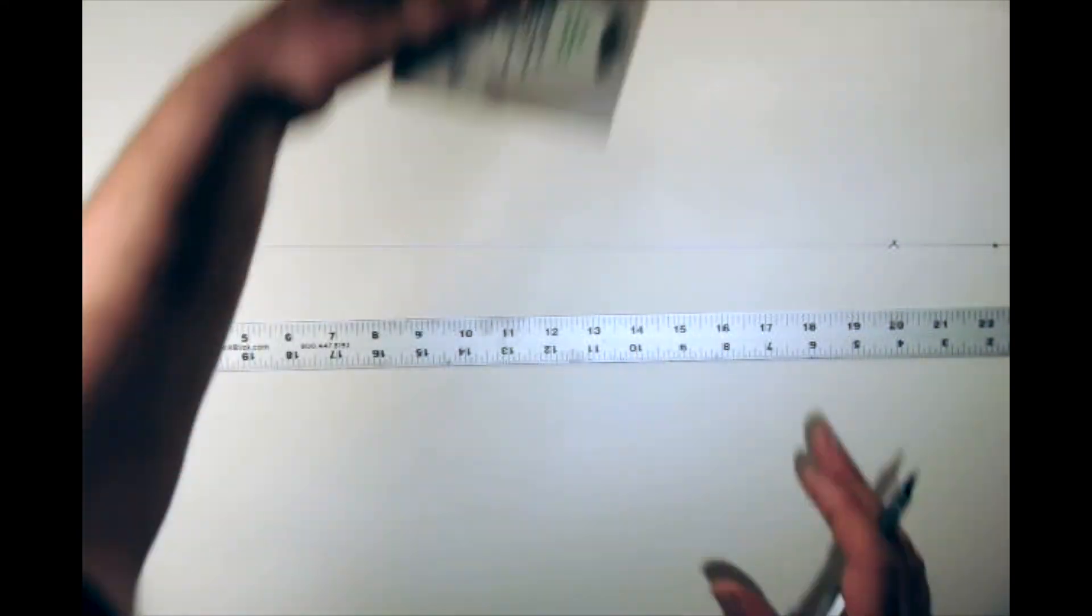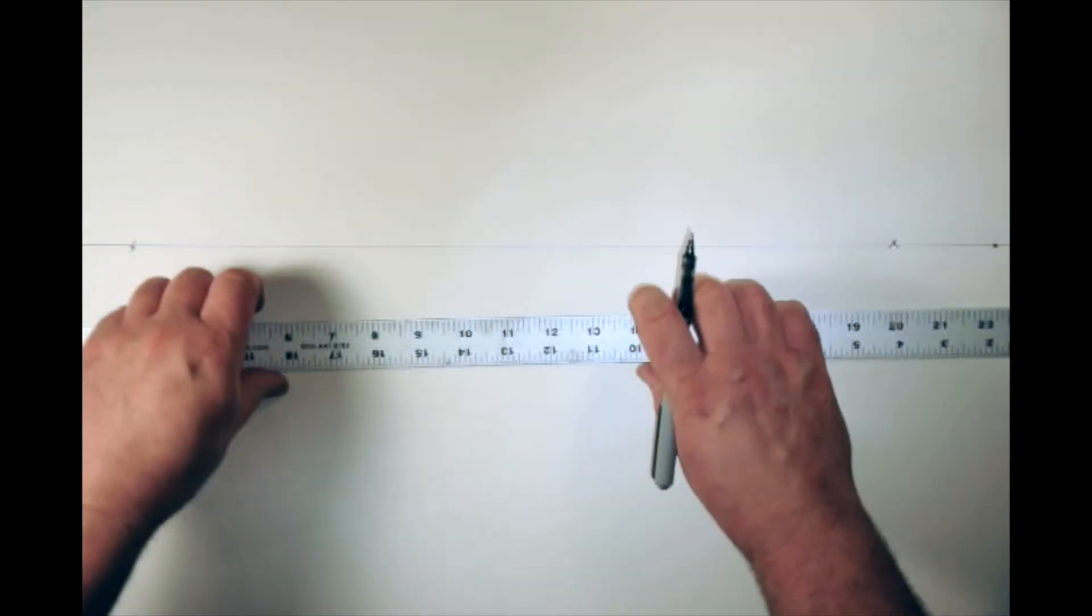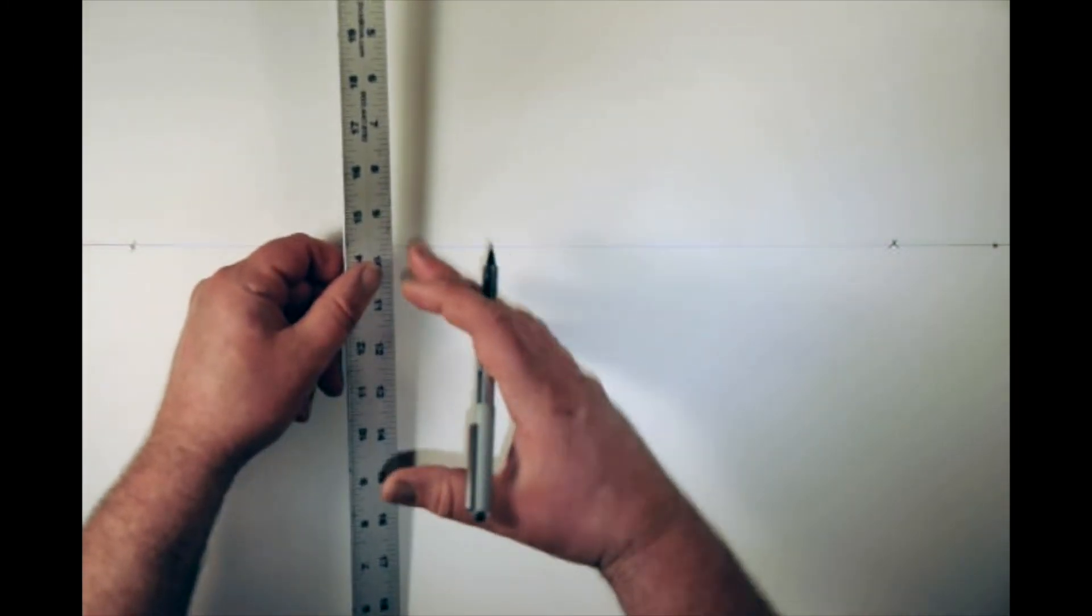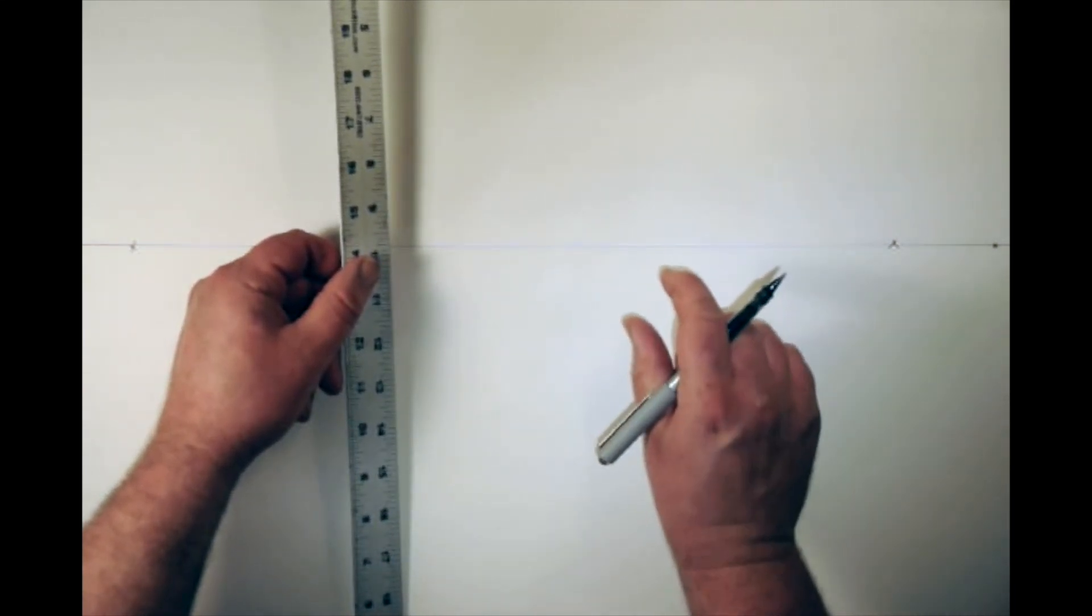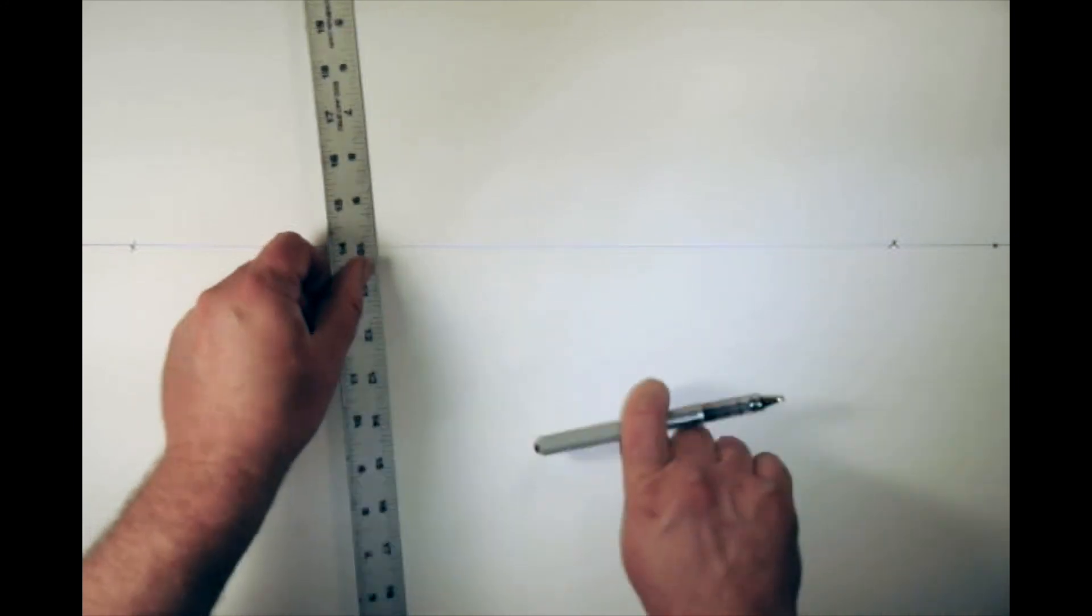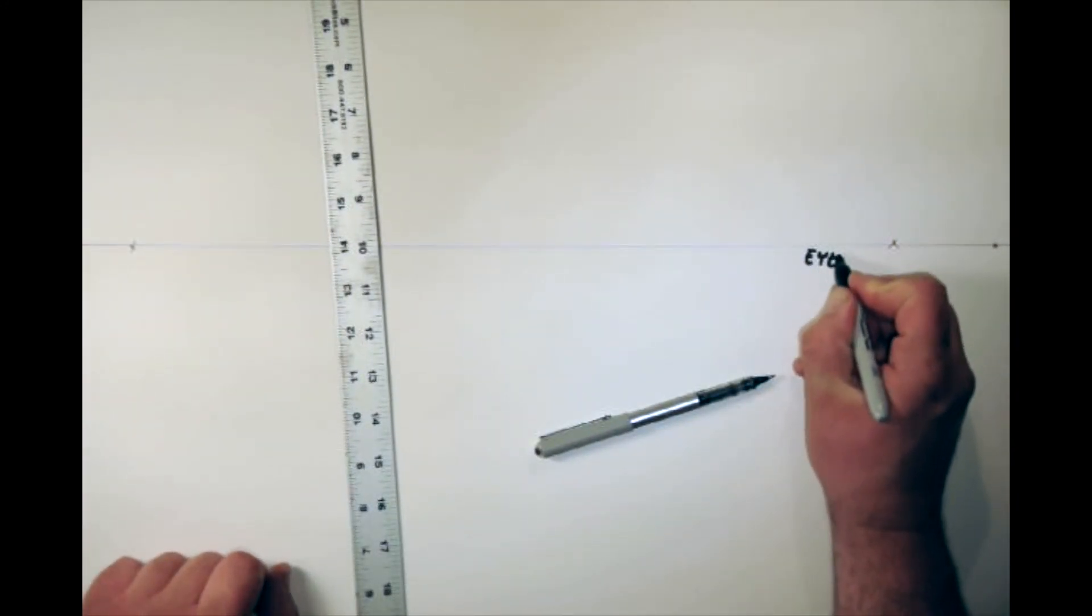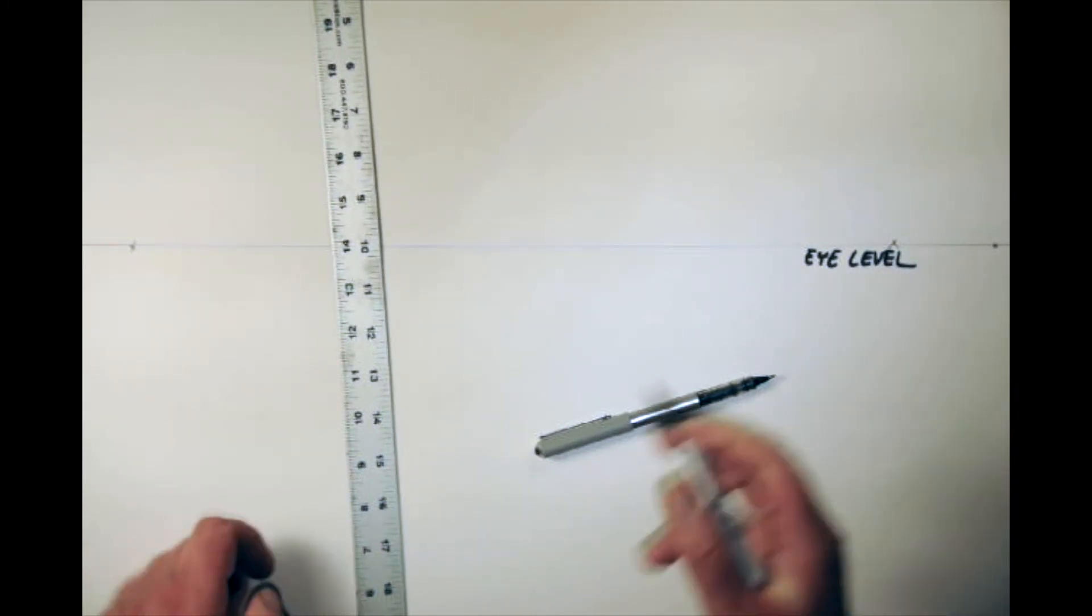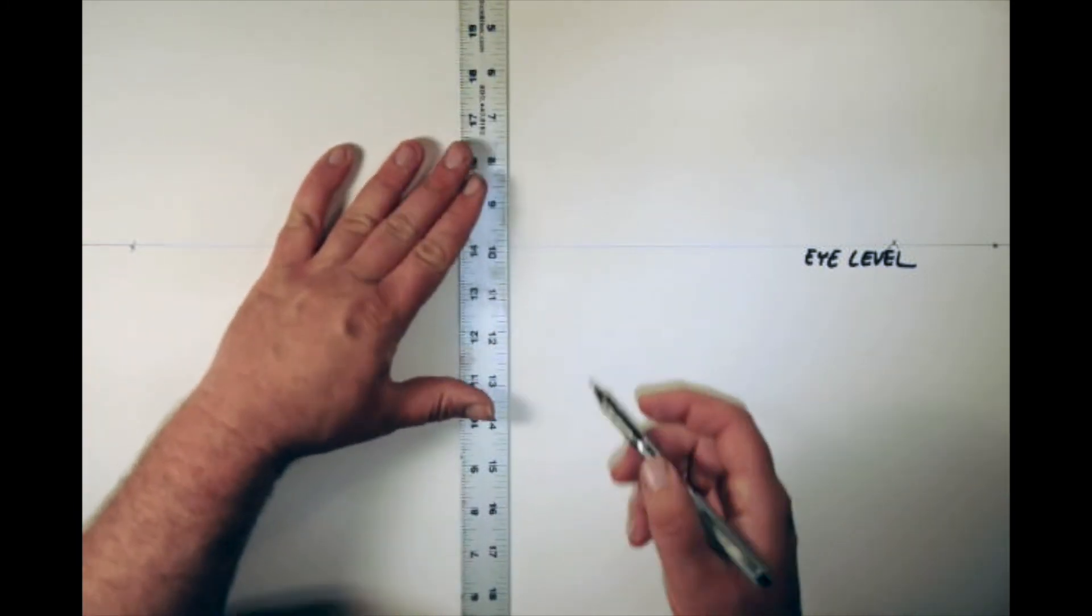We need to figure out where we're going to have the corner of our box, and so you want to be thinking about where it is in context to this horizon line. Remember that this is your eye level—in fact I'll write that right here, eye level. And so you want to make sure that it's logical to that.